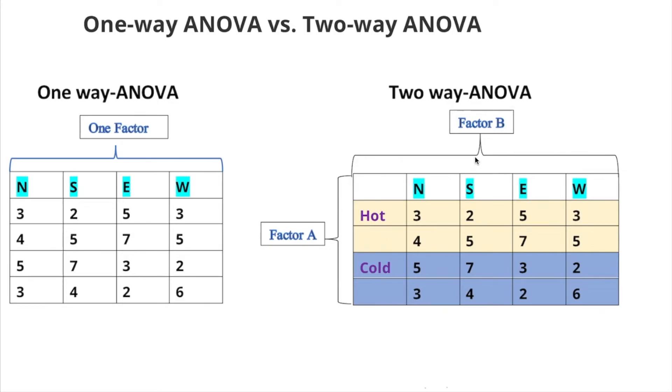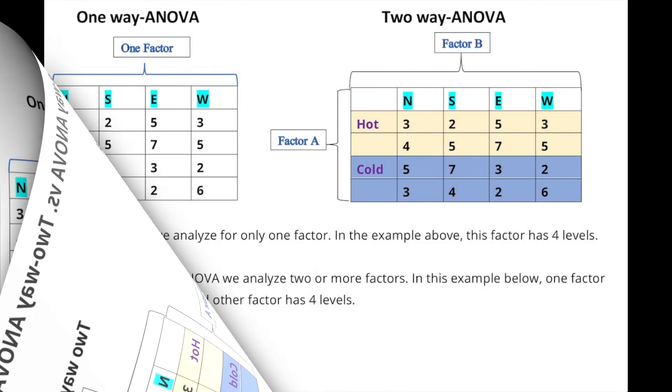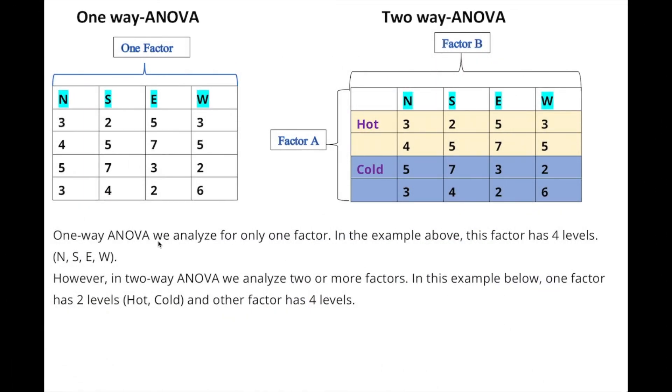We also have to declare the null hypothesis and alternative hypothesis for column versus rows, or Factor A versus Factor B, or interaction - how much they interact with each other. So this is going to be three null hypotheses, and this is going to be one null hypothesis.